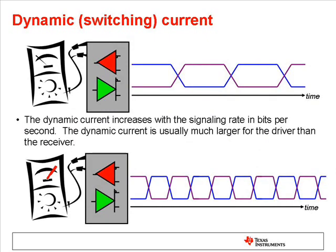The dynamic current occurs inside the transceiver when data bits are transmitted or received. The faster the signaling rate, the higher the current.